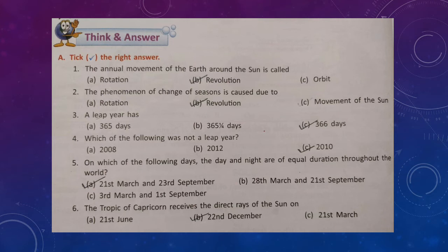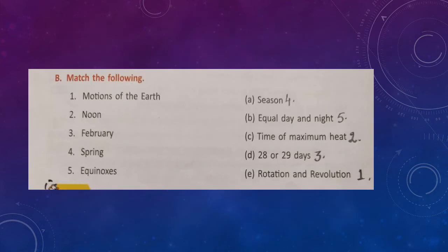21st March is called spring or vernal equinox and 23rd September is known as autumn equinox. Question 6: the Tropic of Capricorn receives the direct rays of the sun on 22nd December — answer B. This day is also known as winter solstice. On summer solstice, the Tropic of Cancer receives the direct rays of the sun.